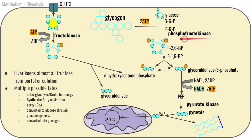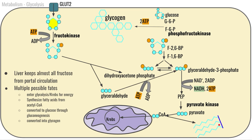Since fructose enters after the phosphofructokinase step — which is heavily regulated based on the cell's energy status — there is a greater potential for fructose to be converted all the way to acetyl-CoA regardless of energy status, with that buildup of acetyl-CoA then going toward lipogenesis. Just as a reminder, the glyceraldehyde from fructose has a phosphate added to become glyceraldehyde-3-phosphate, continuing down through the rest of glycolysis.